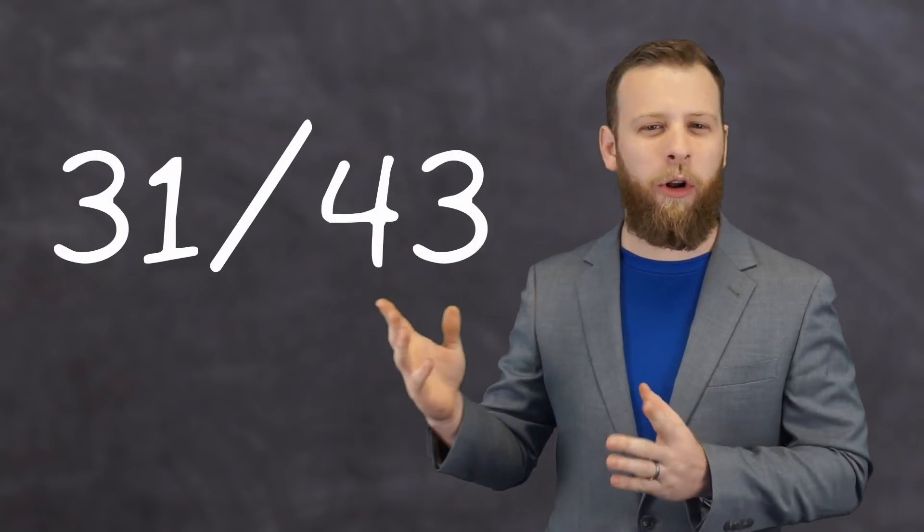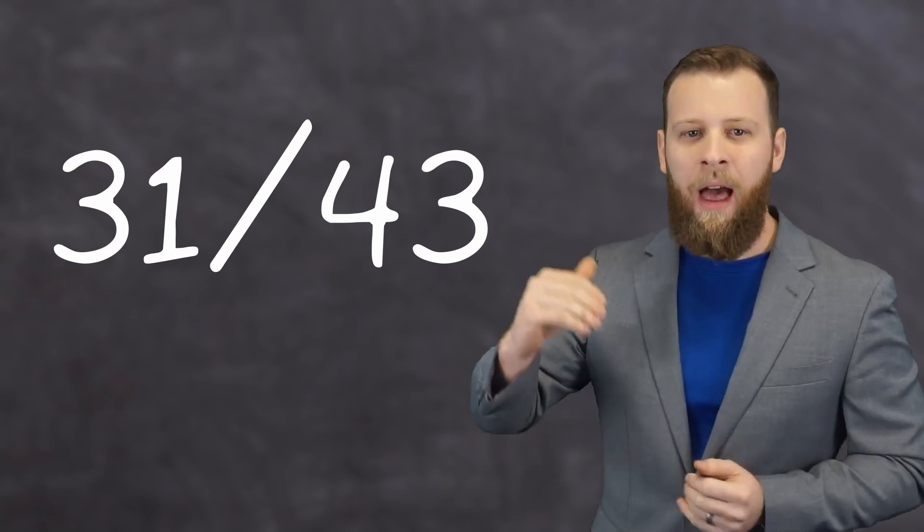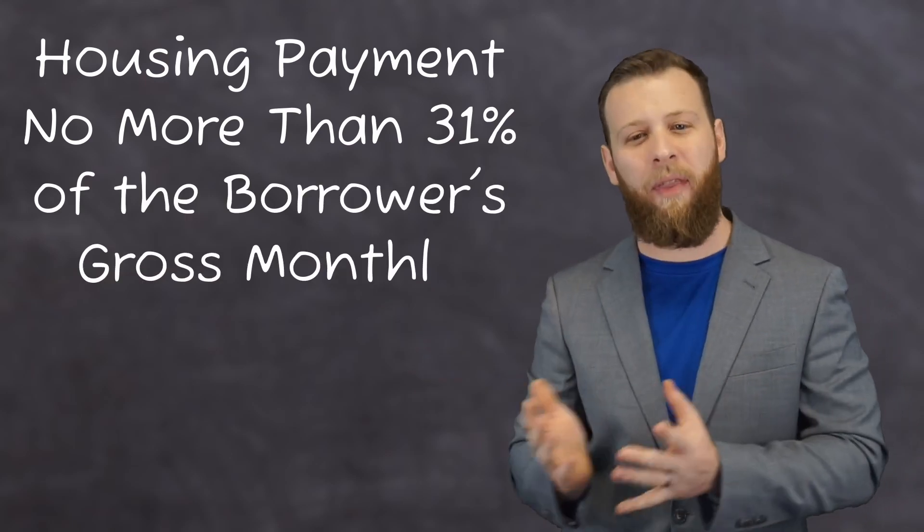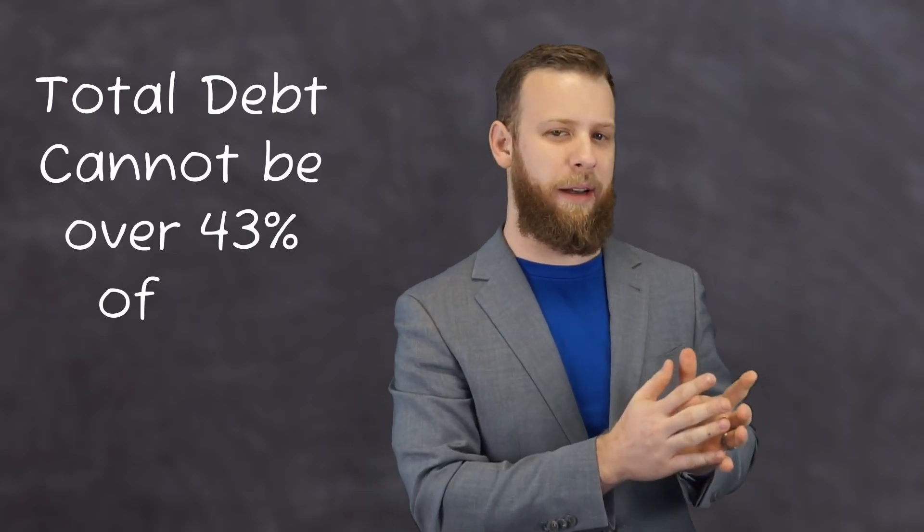These ratios are going to be written something like this, it should show 31/43 there. In this example, this would mean the housing payment can be no more than 31% of the borrower's gross monthly income, and then when included with their other debts, the total debt cannot be over 43% of their monthly income.